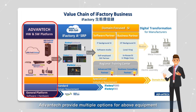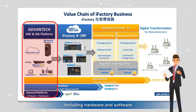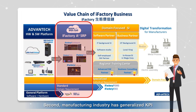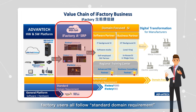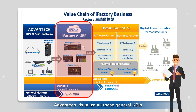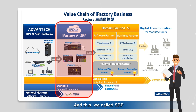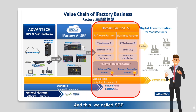Advantech provides multiple options for the above equipment, including hardware and software. Second, the manufacturing industry has generalized KPIs. No matter the company size or differences, factory users all follow standard domain requirements. Advantech visualizes all these general KPIs and prepares a data acquisition edge. This we call SRP.